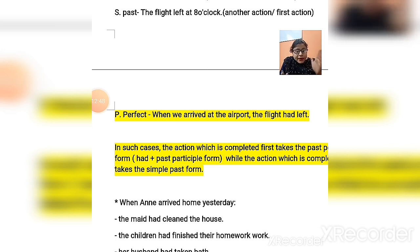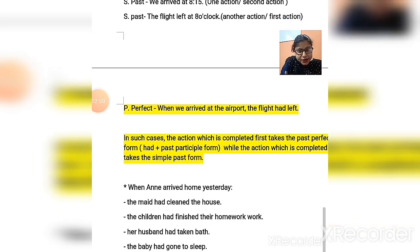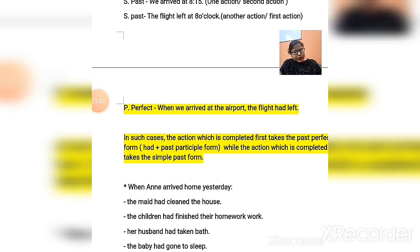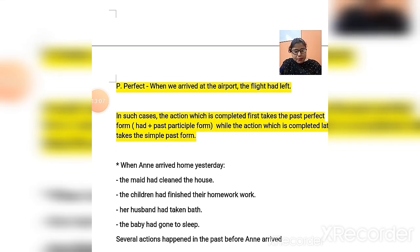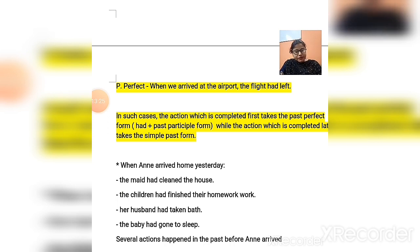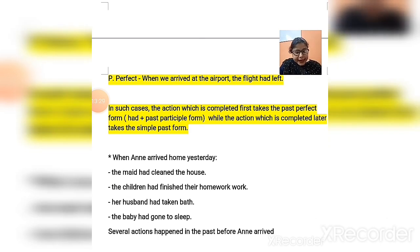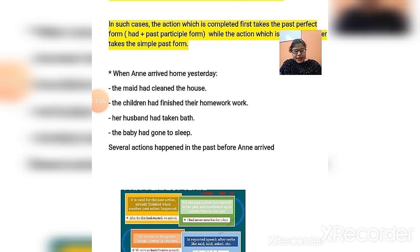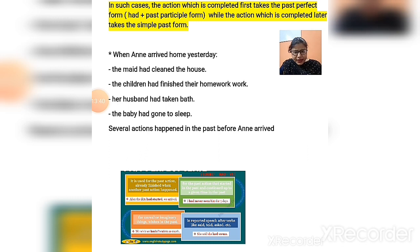So the action that took place first uses past perfect tense. When we arrived at the airport, the flight had already left at 8:00. The action completed first takes the past perfect form — that is 'had' plus the past participle form. With all subjects we use only 'had,' and all verbs are in past participle (third form). The action completed later takes the simple past form. Now let us look at several examples of past perfect tense.